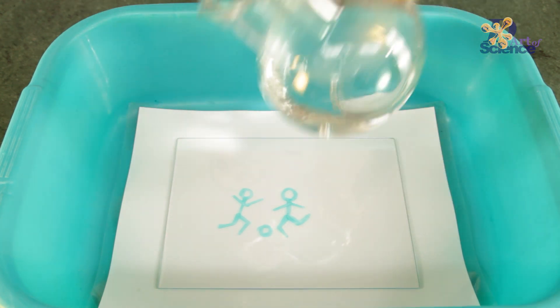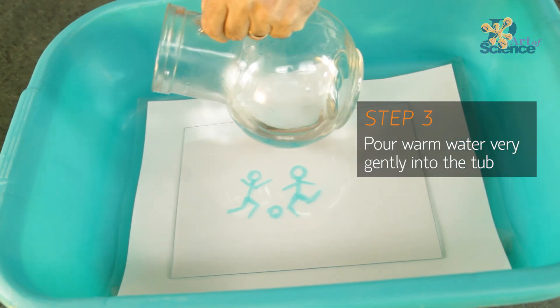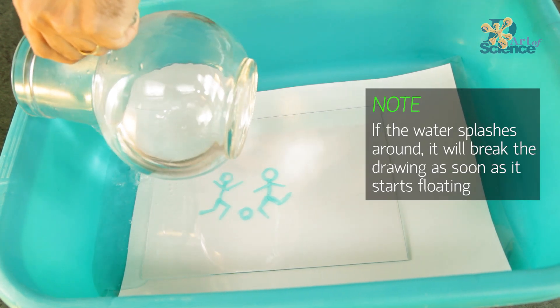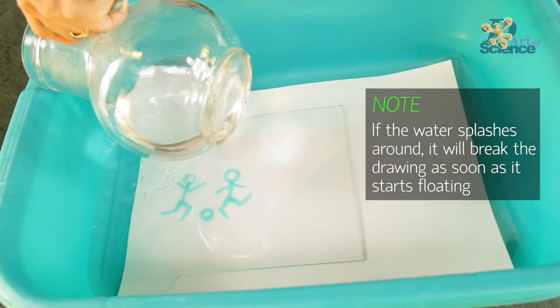What makes this possible is the interesting chemistry of dry erase markers. These markers are usually used to write on whiteboards or glass surfaces and can be easily erased due to ingredients